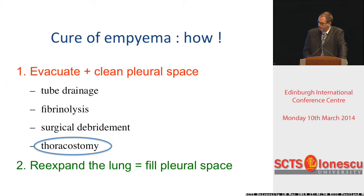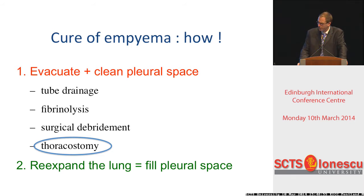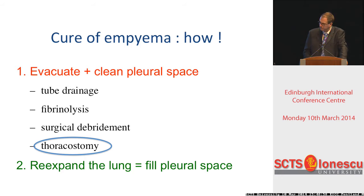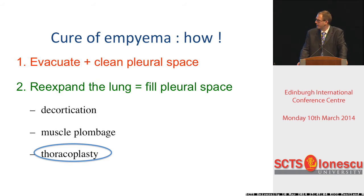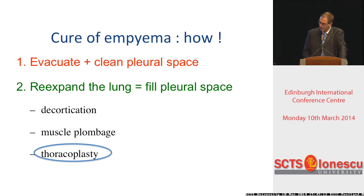Cleaning the pleural space may result in an extreme operation, which is the open window thoracostomy, and filling the pleural space when there is no lung left or few lungs left may require either filling up with muscles or omentum, or bringing the chest wall down to the lung, or to the mediastinum, with thoracoplasty.